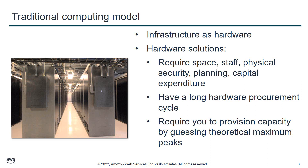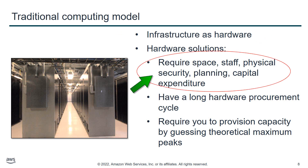If you remember, in an old IT infrastructure system, there were lots of hardware. The traditional computing model is like a lot of hardware sets. Hardware means they are physical. They require space. They require staff to maintain it. They require physical security. They need planning and also a capital expenditure.